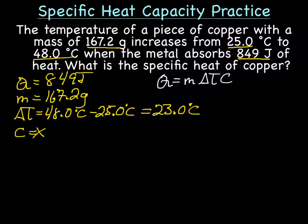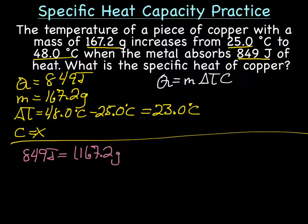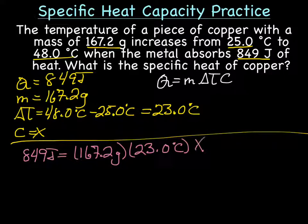From here we just plug this into the formula. So we have Q equals the mass 167.2 grams times delta T, which is 23.0 degrees Celsius, times C, which is our X.